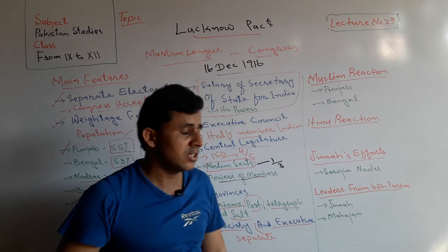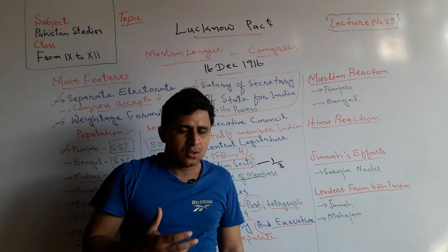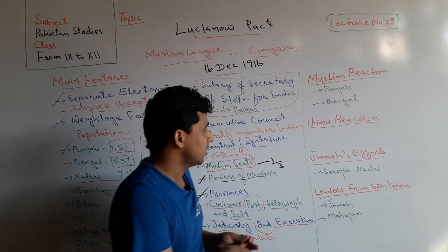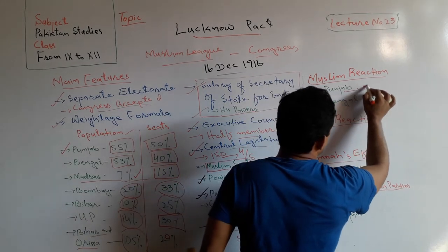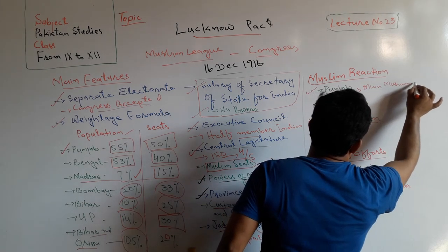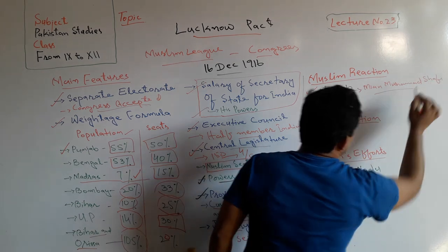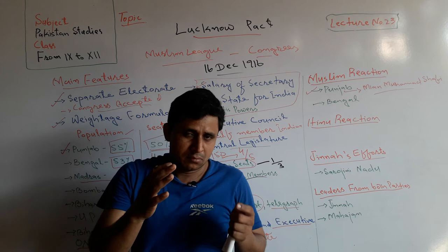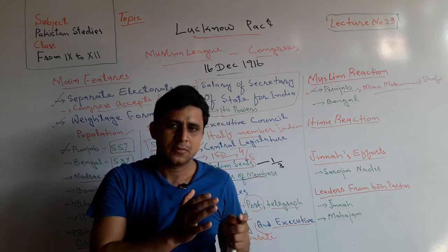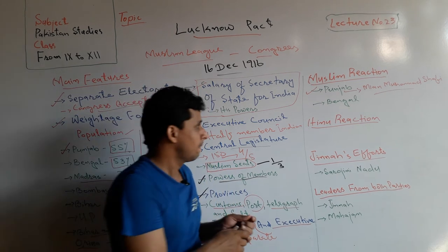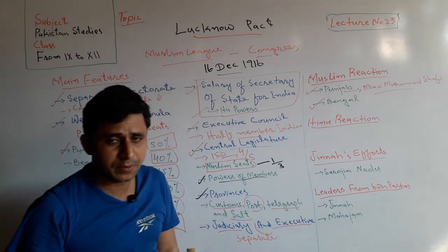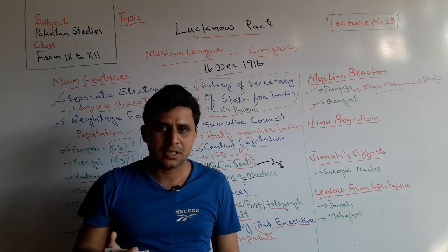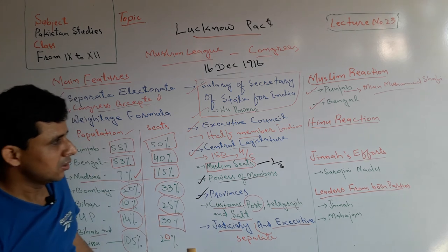Regarding Muslim reaction: when the Lucknow Pact was signed between the Muslim League and Congress, some Muslims rejected it. For example, the Muslims of Punjab, under the leadership of Mian Muhammad Shafi, rejected the Lucknow Pact because, according to it, the Muslim majority in Punjab was converted into a minority. Bengali Muslims also rejected the Lucknow Pact for the same reason — in Bengal, Muslims were in majority but were reduced to minority representation due to the Weightage Formula.